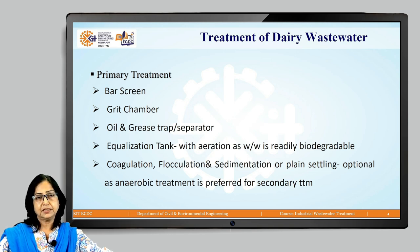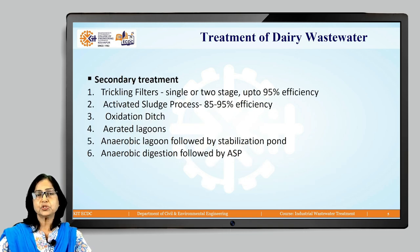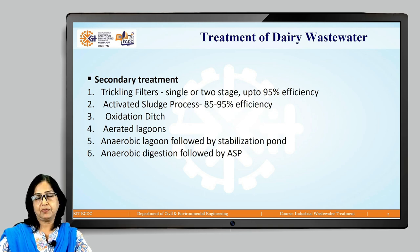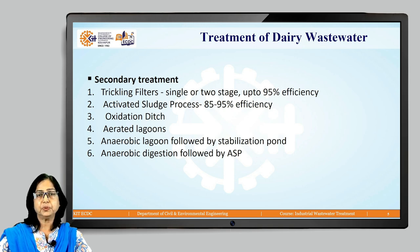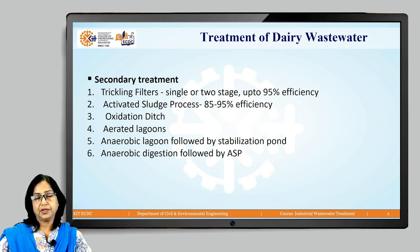Most biological treatment processes are suitable and can be employed efficiently for dairy wastewater treatment because the wastewater is readily biodegradable. A trickling filter — single stage or two stage — achieves up to 95% efficiency. The activated sludge process (ASP) is very popular, with efficiency in the range of 85–95%. An oxidation ditch, which is a cheaper alternative to ASP, is also popular, as are aerated lagoons.